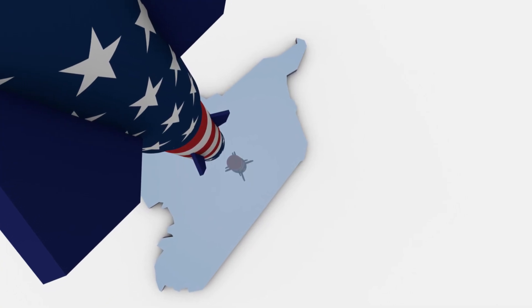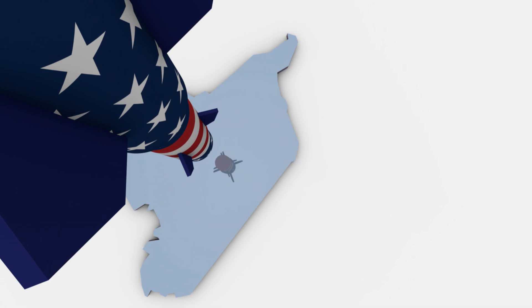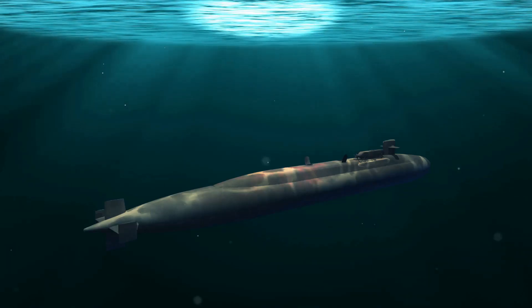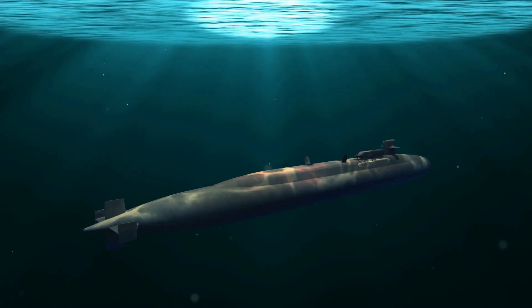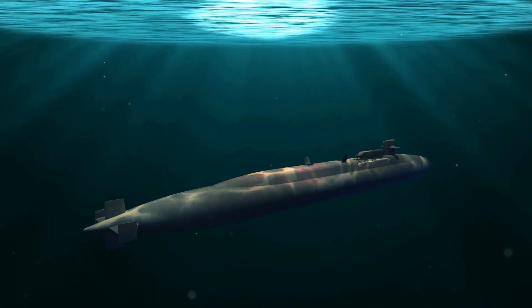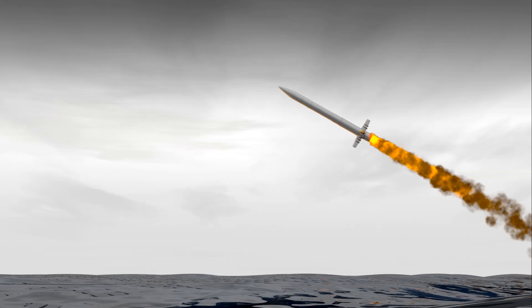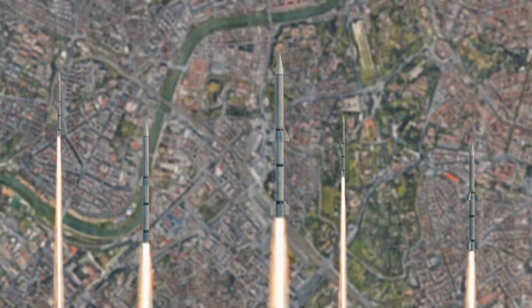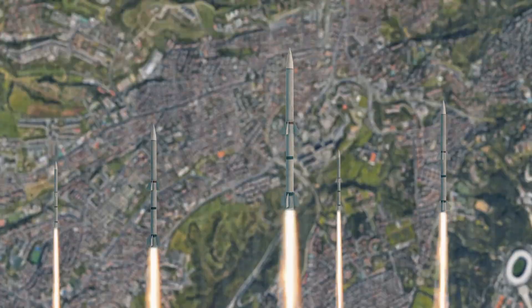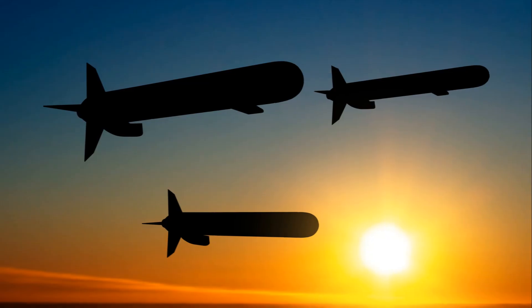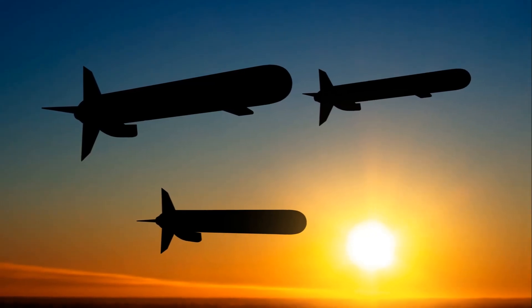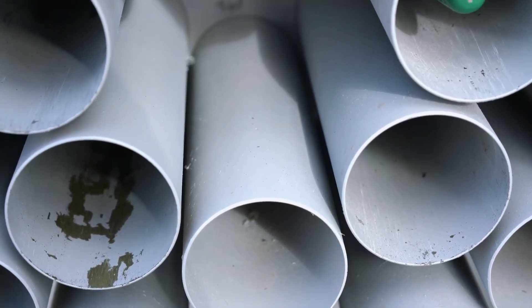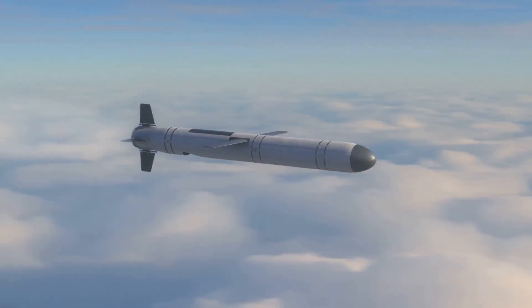Sea-to-air missiles are fired from ships to intercept incoming aircraft or missiles — examples include the RIM-66 Standard and Sea Sparrow. Submarine-launched missiles (SLBM) are launched from submarines, often with long-range capabilities for strategic deterrence or attack — examples are Trident II and Bulava. Land attack missiles can be fired from land platforms to strike land targets, often with long range and high accuracy — examples include the Tomahawk and ATACMS.